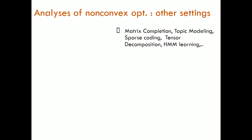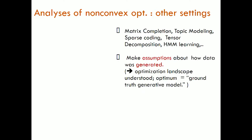You have a non-convex objective and you can analyze it. It turns out that all of these results need to make assumptions about how the data was generated. Most of them are algorithms that assume the data was generated according to some probabilistic model, so the optimization landscape is understood. The parameters are not known, but at least the overall structure of the landscape is understood. We know what the optimum solution is — it's the ground truth model which generated the data.